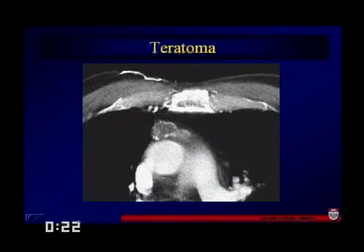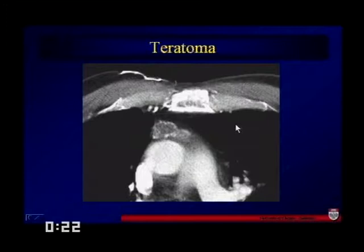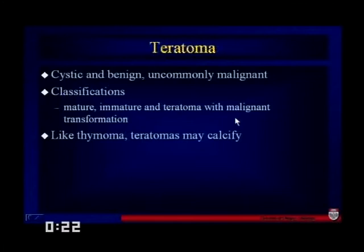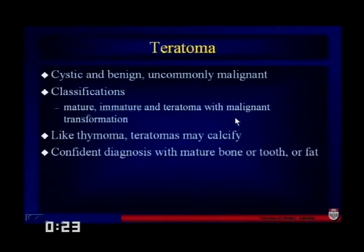This is a teratoma — a little irregular, but you can see there's not only some calcification in it, but also some lower density fat content. This is an anterior mediastinal mass which is a teratoma. Teratomas are uncommon. They can be cystic and benign, may calcify, and may become malignant over time. You can make a confident diagnosis if you clearly see tooth or bone material or fat. That wraps it up for teratoma.